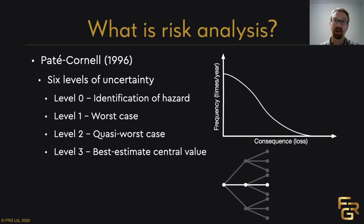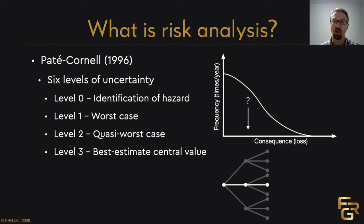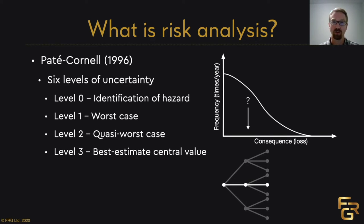Level three is when we try to do an estimate based on the central value. Using an event tree, we focus on the average outcome — for example, the average fire size. This means we're doing a design for an average, which in fire safety engineering is not used very much. Pate-Cornell identified that for economic risk it makes sense, but if you're looking at life safety and we're by nature risk averse, it might not make sense to look at the average number of people killed in a fire.